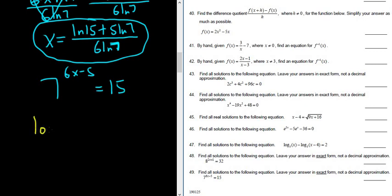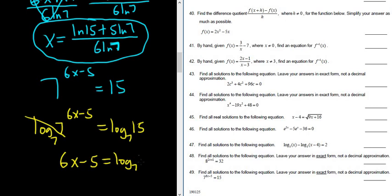So you put a log base 7 here of 7 to the 6x minus 5, then here you have log base 7 of 15. And these cancel, right, because they're the same base. So you get 6x minus 5 equals log base 7 of 15.